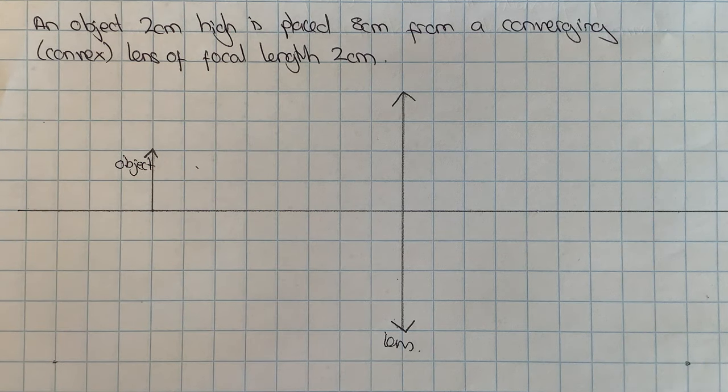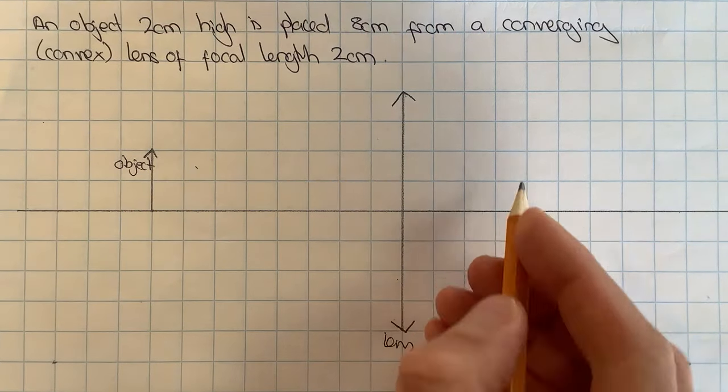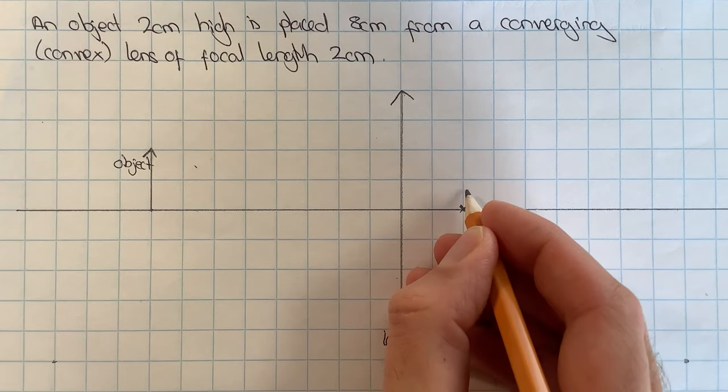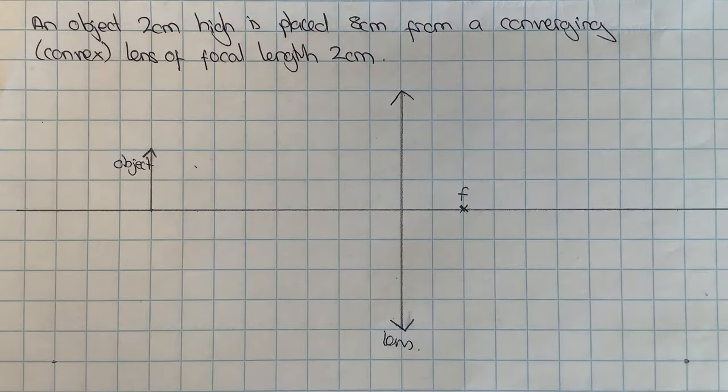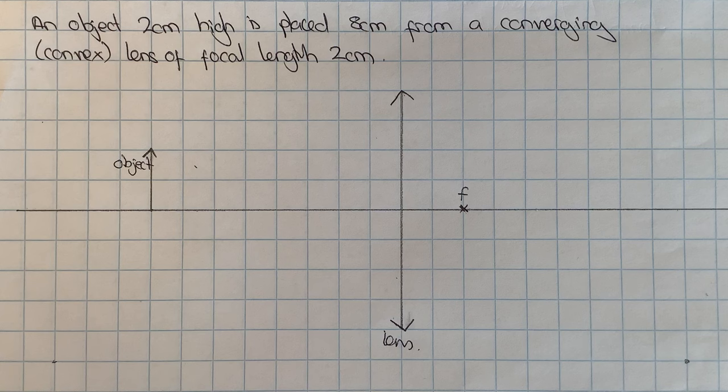The next thing to do is to mark on the focal length of the lens, which it says is two centimeters. So I'm going to count out one, two centimeters, put a little cross to show that with an F by it to represent the focal length. Now quite often in exam questions some of these things will be drawn in for you already.